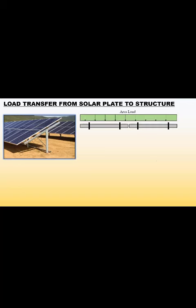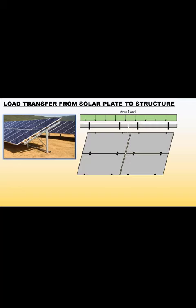So this is the solar panel and, for example, this is the area load. This is the plan and these are the holes marked. The total length of the array is L and the width is W.